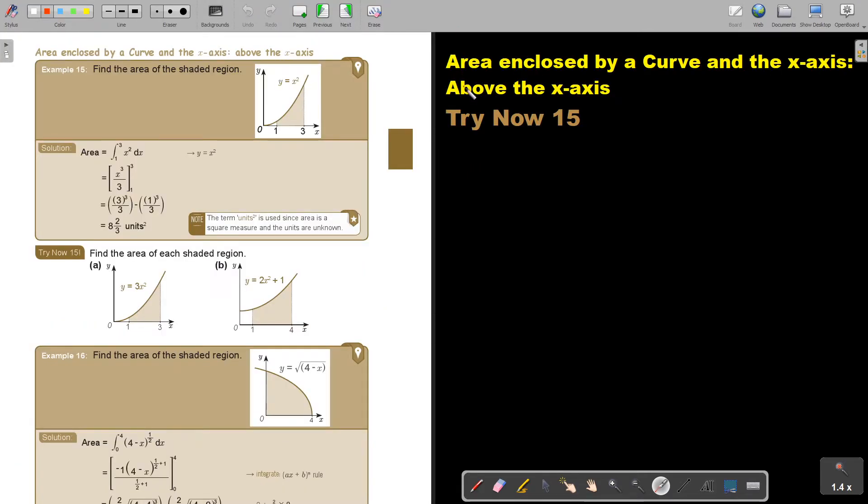Let's look at an example. We're first going to look at the area enclosed by a curve and the x-axis above the x-axis. We will also look below the x-axis, but first just above the x-axis. So the area, there it is, that's my formula. I will just integrate, I will just substitute, and that will be my area underneath that curve between 1 and 3.